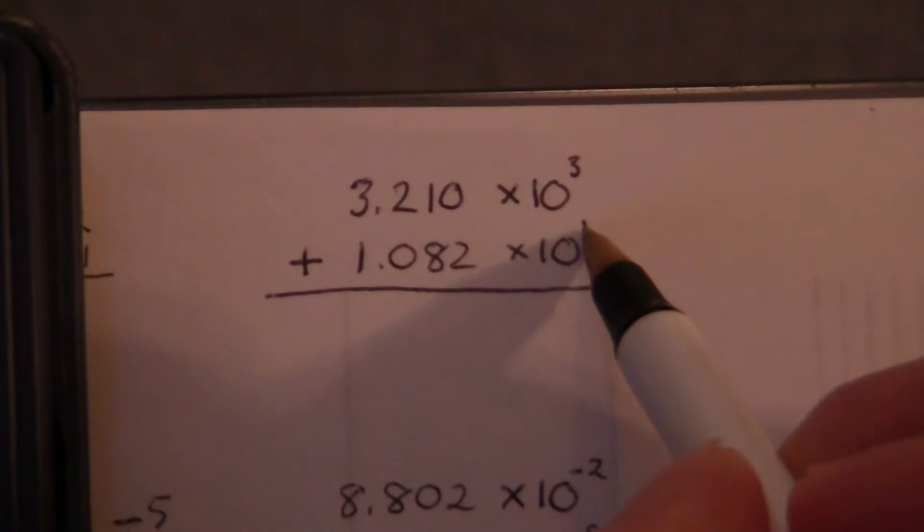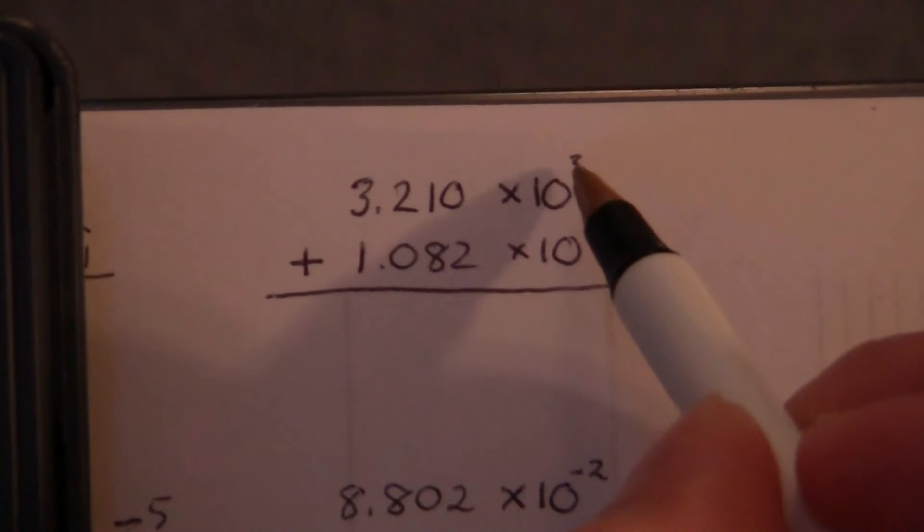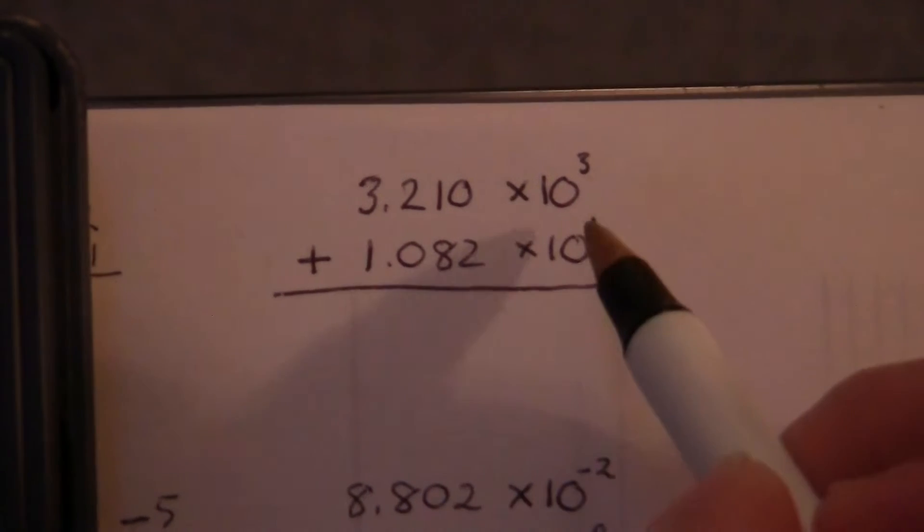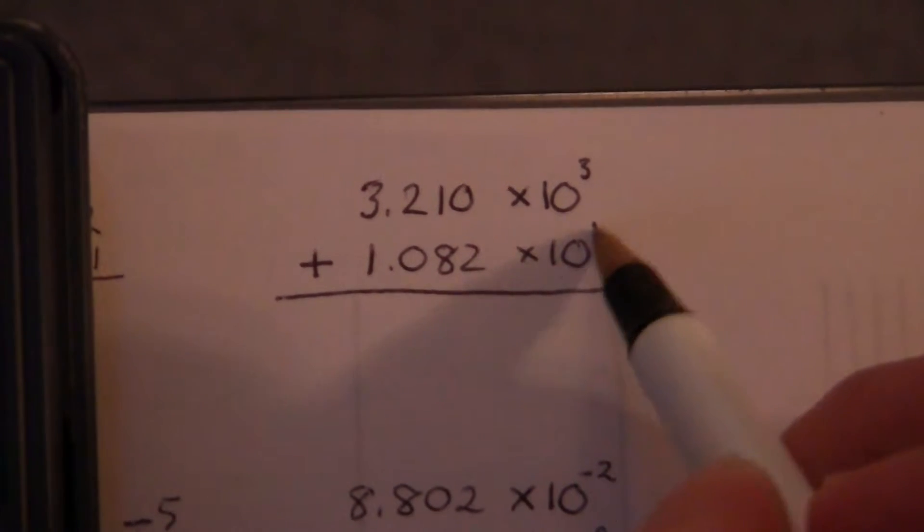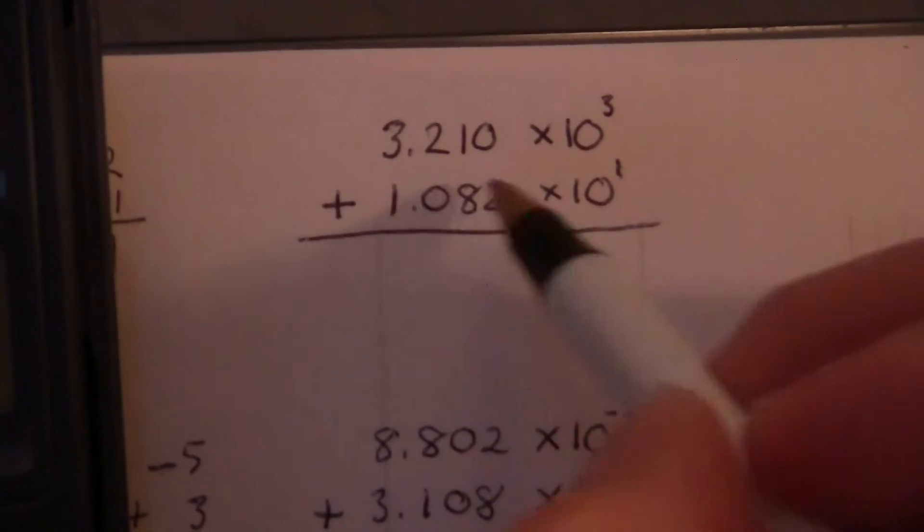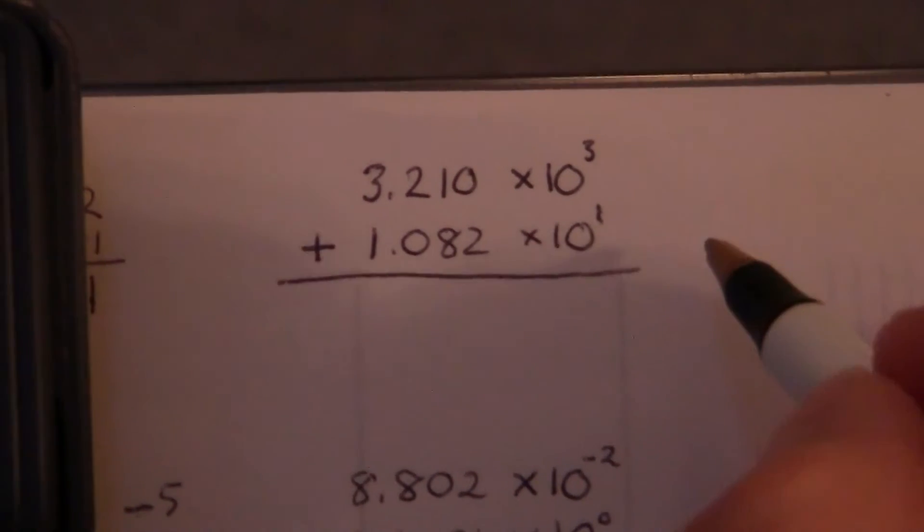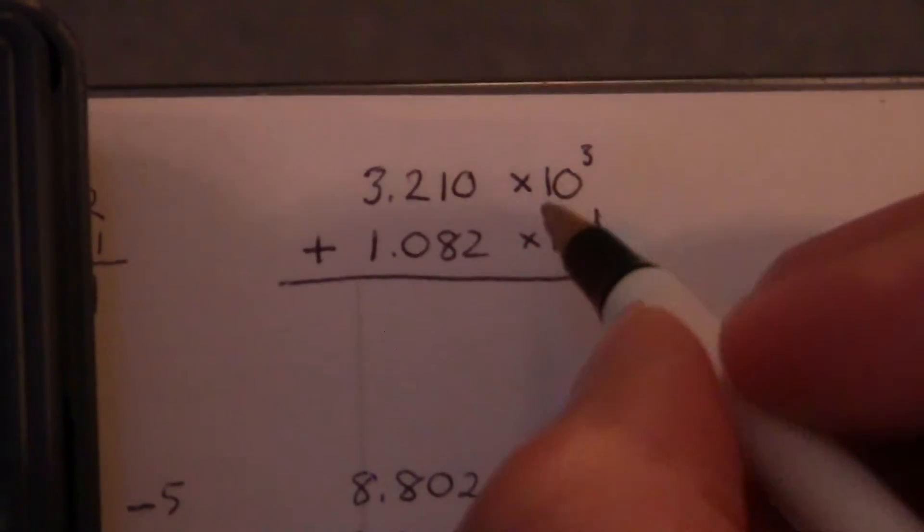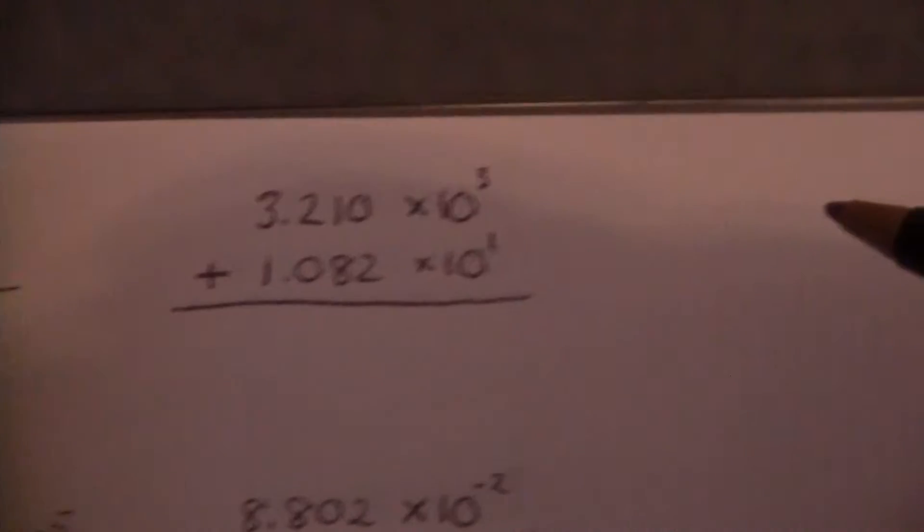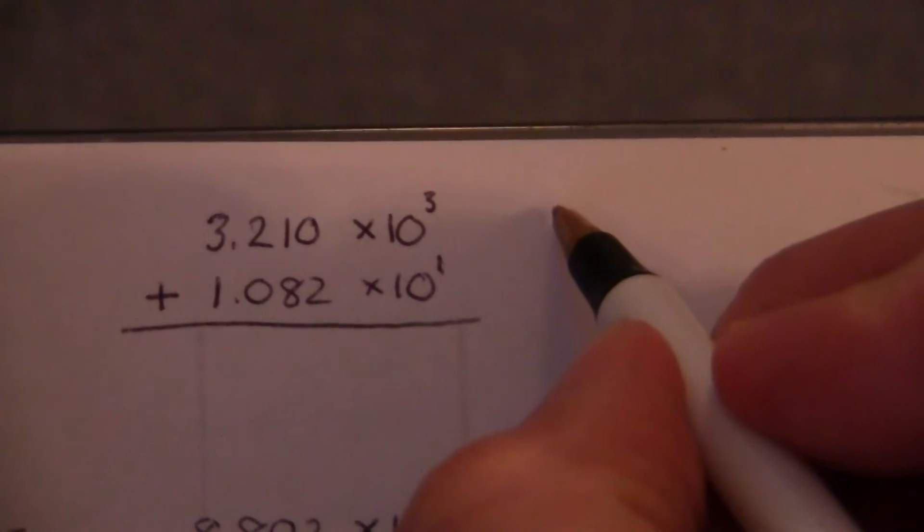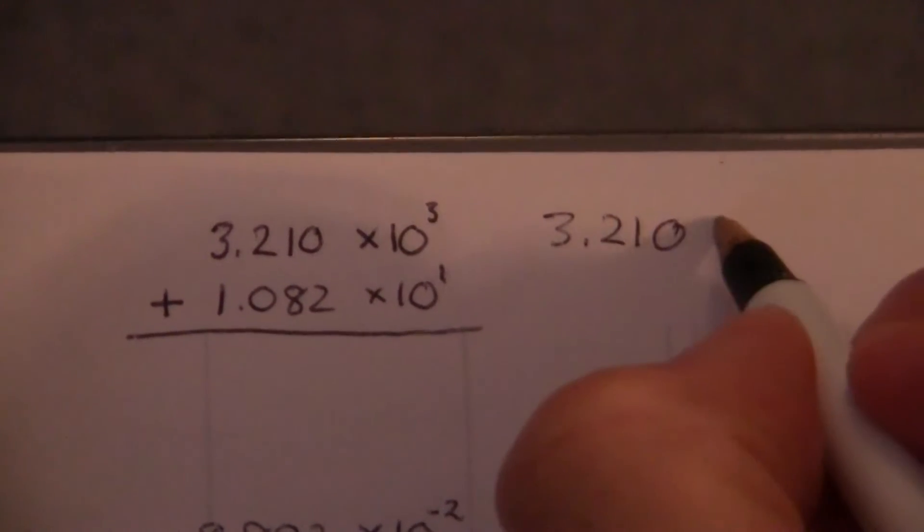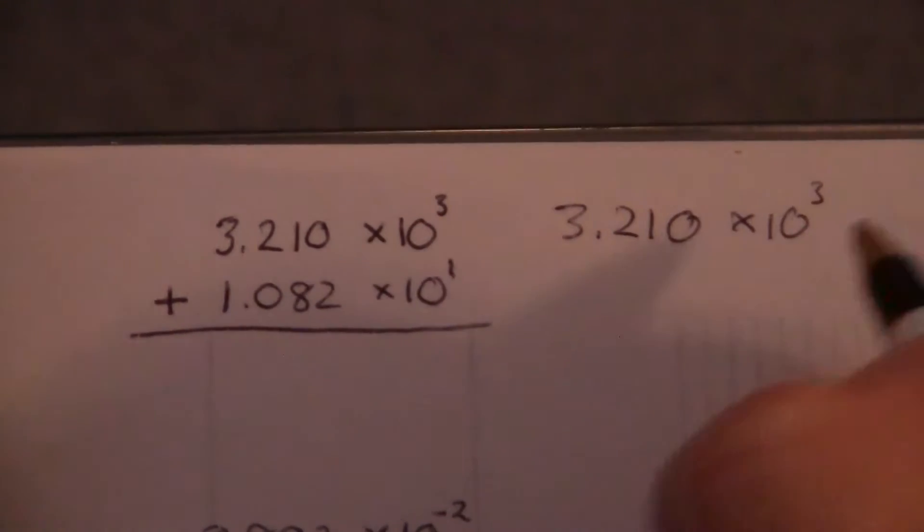So here, it's simplest if we always just convert the lower one to the higher one. So let's move this 10 to the 1 up to a 10 to the 3. So we're going to change our number here before we add it so that the decimal will be pushed the same amount in both cases. So let me just rewrite this next to it here, times 10 to the 3rd.